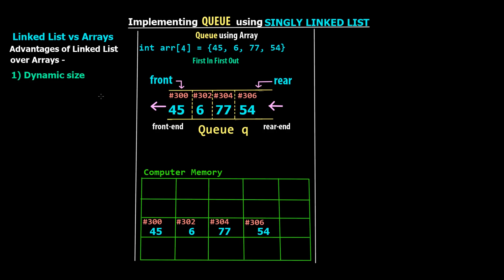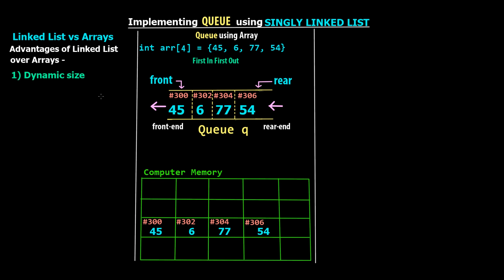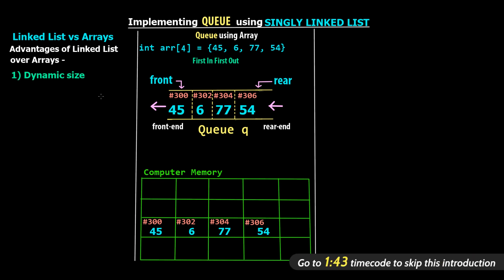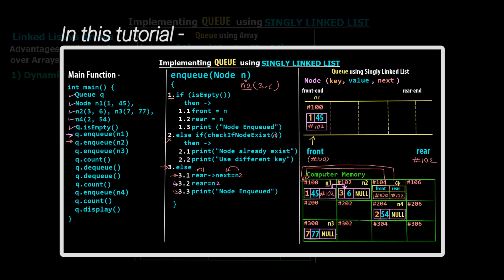Yo, what's going on guys, Tanmay here for SimpleSnippets, and welcome back to another video tutorial on data structures and algorithms. As the title of the video suggests, today we are going to understand the implementation of a queue data structure using a singly linked list. This is the part 1 wherein we discuss the overall working of a queue using a singly linked list, and not queue using array.